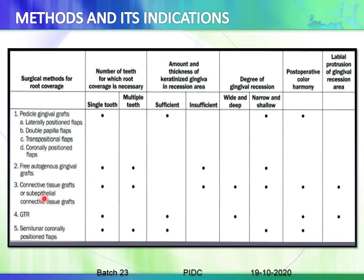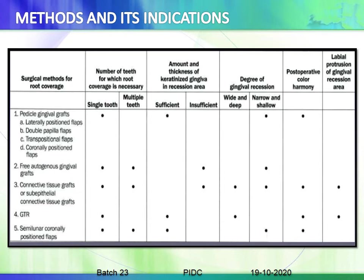Guided tissue regeneration can be done on single teeth with sufficient keratinized gingiva; it works for wide and deep defects with good post-operative color harmony and in labial protrusion cases. The semilunar coronally repositioned flap can be done on single or multiple teeth with sufficient keratinized gingiva, and is indicated for narrow or shallow recession depths, with post-operative color harmony present.